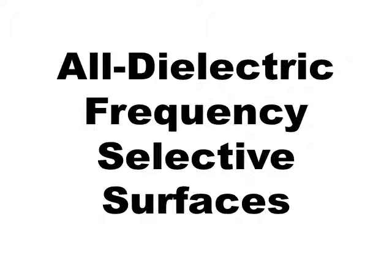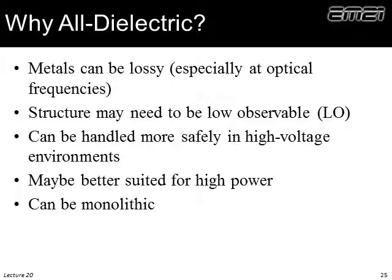Now a special side topic: the all-dielectric frequency selective surface. This is very niche — you won't see a lot about this — but there are times where it serves an application very well. Why an all-dielectric FSS? One reason is optics. Metals are very lossy at optical frequencies, and since these FSS structures are resonant, there are large currents in the metallic elements that absorb a lot of power at optical frequencies. At radio and microwave frequencies that's much less of a problem, which is why metallic FSS dominates there.